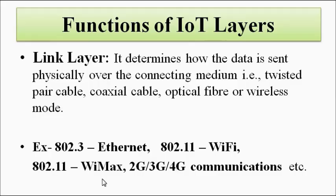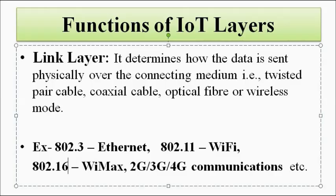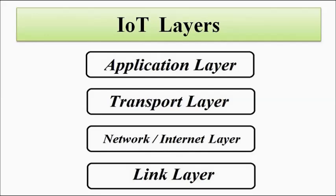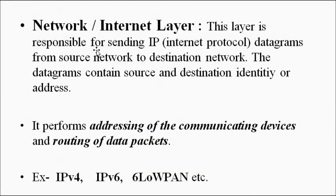Examples of link layer protocols are: 802.3 Ethernet, 802.11 Wi-Fi, 802.16 Wi-MAX — note: 802.16 is Wi-MAX, not 802.11 — and 2G, 3G, 4G communication protocols. These are the protocols related to the physical characteristics of the connecting medium. The network or internet layer is the layer just above the link layer.